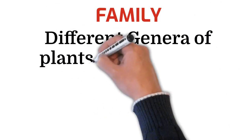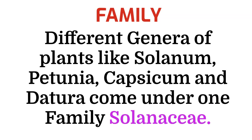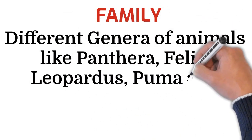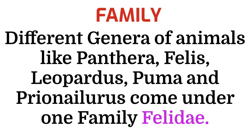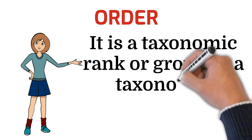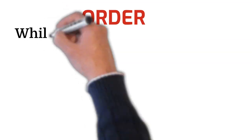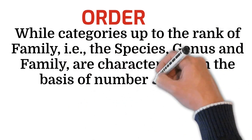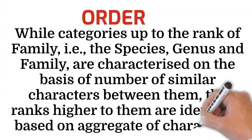For example, different genera of plants like Solanum, Petunia, Capsicum, and Datura come under one family Solanaceae. Likewise, different genera of animals like Panthera, Felis, Leopardus, Puma, and Prionailurus come under one family Felidae. Order is a taxonomic rank in a taxonomic hierarchy between family and class. While categories up to the rank of family — species, genus, and family — are characterized on the basis of number of similar characters, the ranks higher to them are identified based on aggregate of characters.